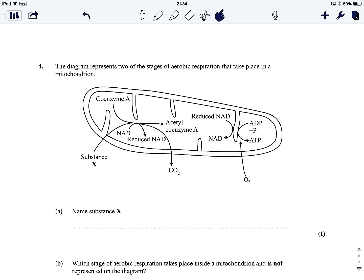So we are confronted with a mitochondrion and it says that the diagram here is representing two of the stages of aerobic respiration. So two things that happen in aerobic respiration that take place in the mitochondrion. So we can eliminate glycolysis straight away, we're thinking link, we're thinking Krebs and we are thinking electron transport chain.